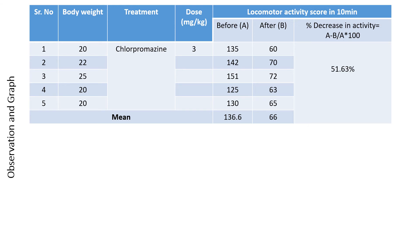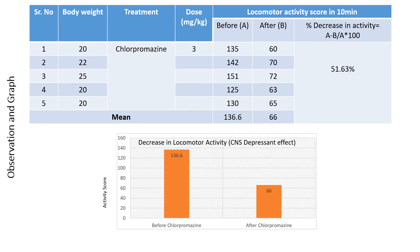Plotting the graph — the decrease in locomotor activity shows the CNS depressant effect. Before chlorpromazine, the activity score was 136.6, but after chlorpromazine, locomotor activity was reduced to 66, demonstrating the CNS depressant effect.